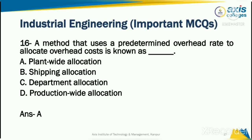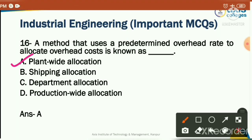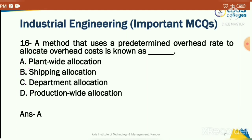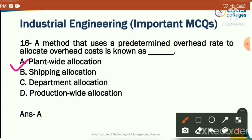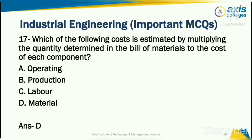A method that uses a predetermined overhead rate to allocate overhead cost is known as: plant-wide allocation, shipping allocation, department allocation, or production-wide allocation. The correct answer is option A: plant-wide allocation — defined as the method that uses a predetermined overhead rate to allocate overhead cost.